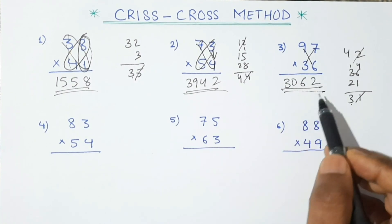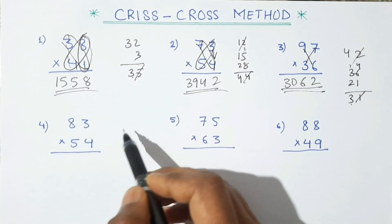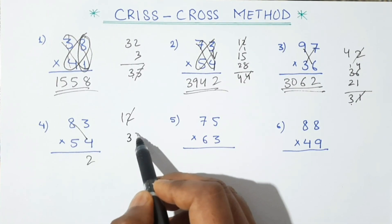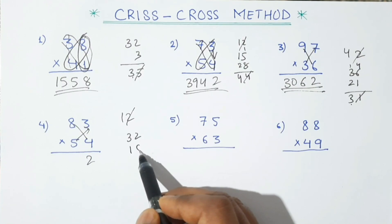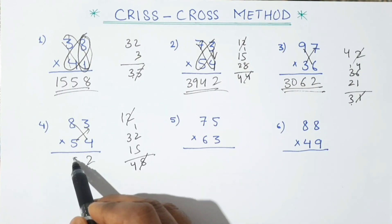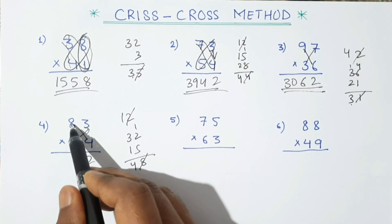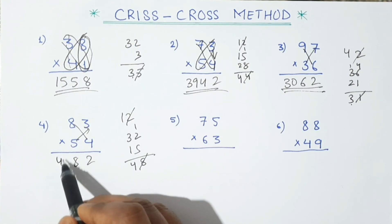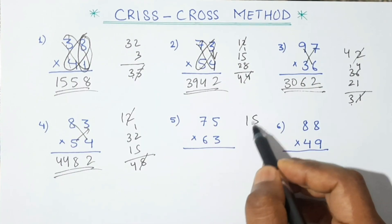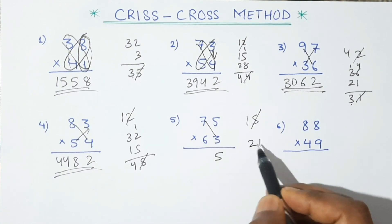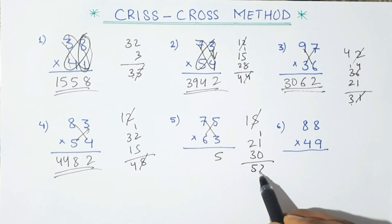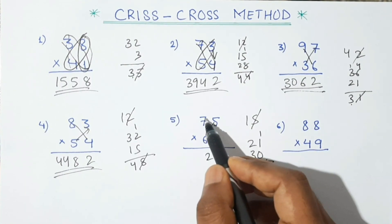Similarly for the next question: first multiply the units — 5×3 is 15, write only 5 and carry 1. Now cross multiply: 7×3 is 21 and 5×6 is 30, plus carry 1 gives 52. Write only 2 and carry 5.